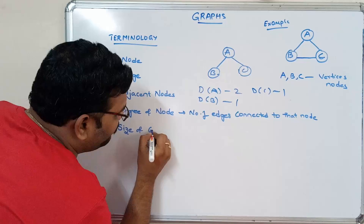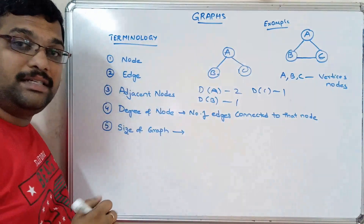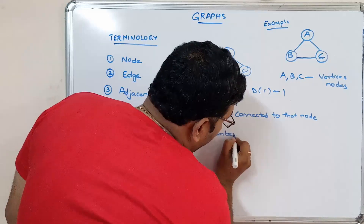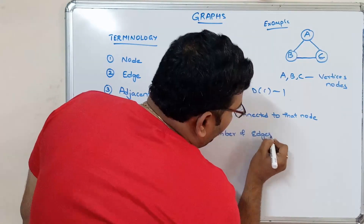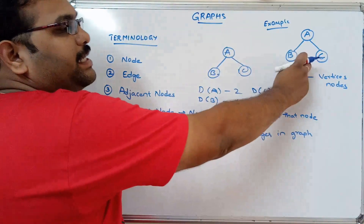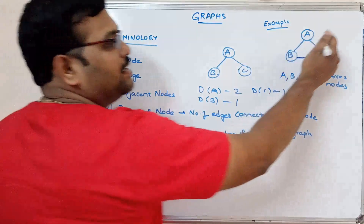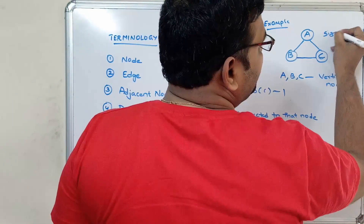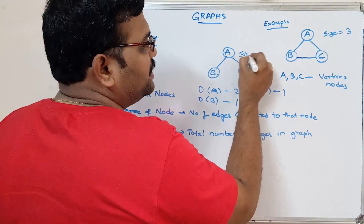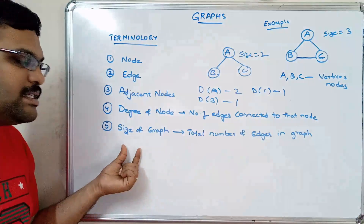The size of a graph represents the total number of edges in the graph. For example, if the graph has three edges, the size of the graph is 3. If it has only two edges, the size is 2. So the total number of edges in the graph represents its size.